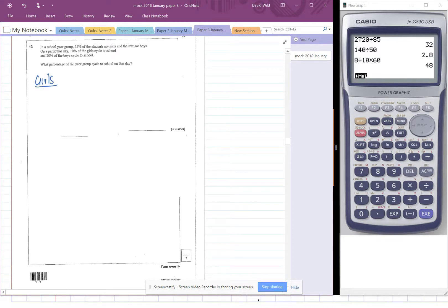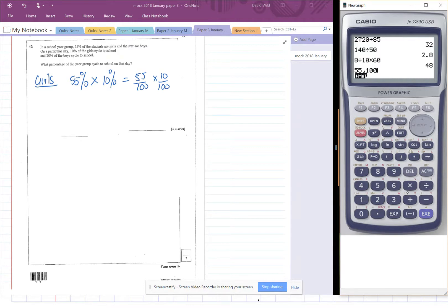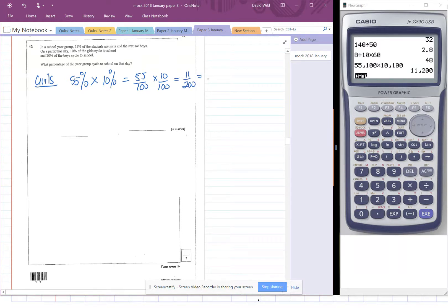So let's first of all sort out girls. So girls. Well, we know that 55% of the school is girls and of those 10% of those travel by bike or cycle. So what's 55% times 10% and we do that in the calculator. 55 divided by 100 times 10 divided by 100 and we get 11 over 200 which of course is 5.5 over 100 which is 5.5%.